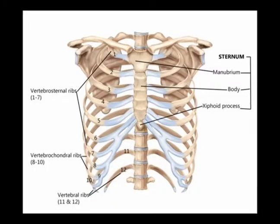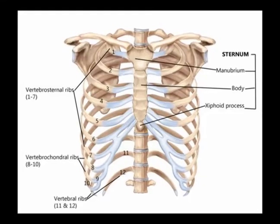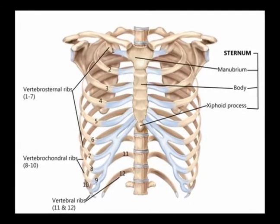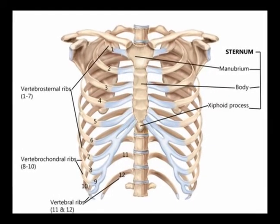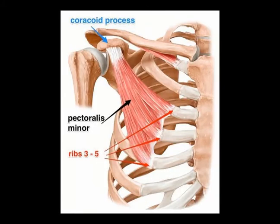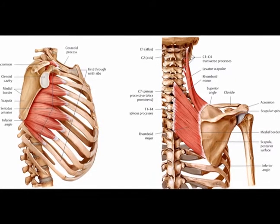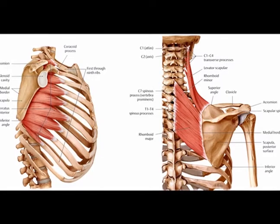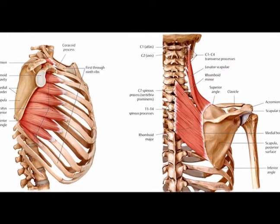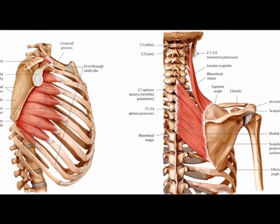Another function of the rib cage is that it expands during the breathing process — extremely important. Another function of the rib cage is that it serves as an attachment site for a large number of muscles. These are muscles from the neck, muscles from the shoulder, muscles from the back, muscles from the thorax, and from the abdominal region. So there's a large number of muscles that attach to the rib cage.